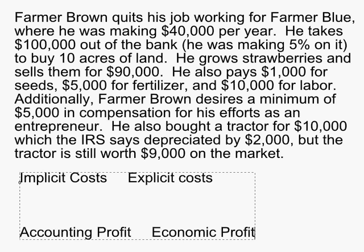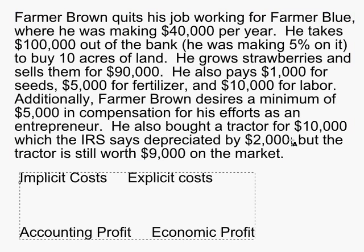He also bought a tractor for ten thousand dollars, which the IRS says over the last year depreciated by two thousand dollars, but the tractor is still worth nine thousand dollars on the resale market. The typical problem will now ask you to identify which of these costs are implicit, which are explicit, and then calculate the accounting profit and the economic profit. So let's do that.